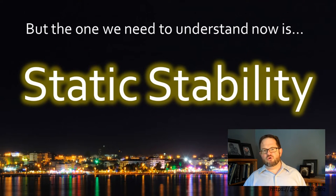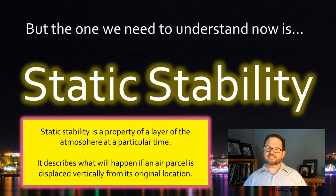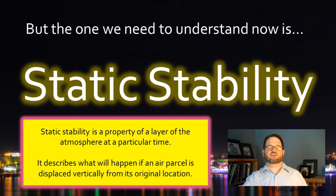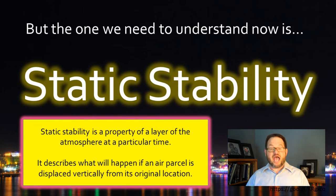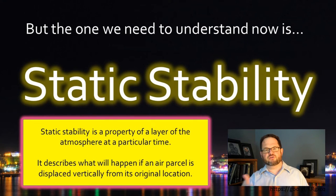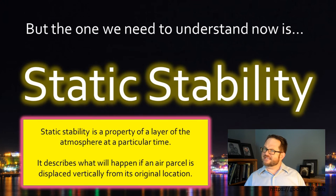The kind of stability we're worried about in this module is static stability. Static stability is a property of a layer of the atmosphere at any given time — say from the surface to 100 meters up, or from one to two kilometers up. It describes what's going to happen if you take an air parcel in that layer and move it vertically from its original position. If you force it to move — like lifting air over a hill, or a cold or warm front forcing air to rise — then what happens? That's the core of what static stability means.